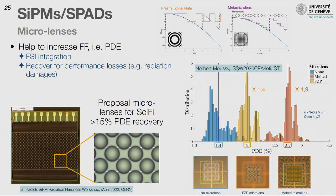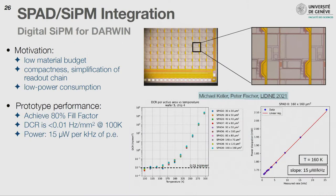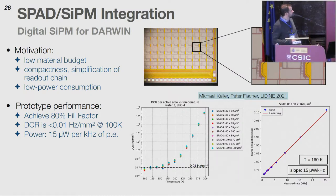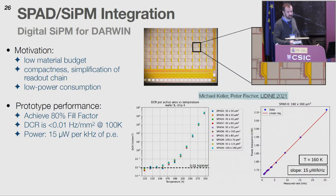A very concrete example is the digital silicon PM developed for the DARWIN dual-phase TPC. These sensors have already demonstrated very good performance in terms of dark count rate, especially at cryogenic temperature, and very low power per photon. This is extremely useful because it greatly reduces the need for a full readout chain in the back, saving material and improving radiopurity.